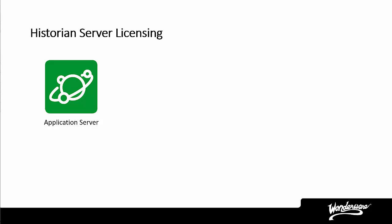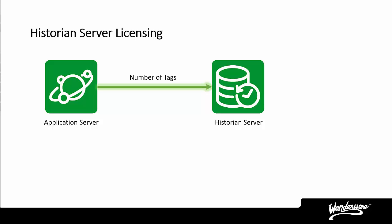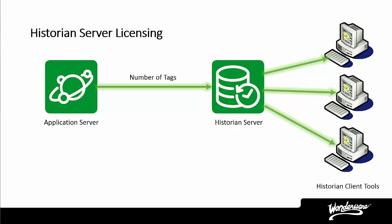The next product is the Historian Server. In a Wonderware System Platform application, all configuration is contained in the Wonderware Application Server. You can enable any variable to be historized to the Wonderware Historian. When this is done, the Wonderware Historian configuration for the variable and its data is pushed from the Application Server to the Historian. The Wonderware Historian is licensed based on the variables configured in it — Wonderware calls these variables tags. When you enable a variable in the Application Server to historize its data, this adds one tag to the Wonderware Historian license count. The Historian stores data so that other computers can access it.